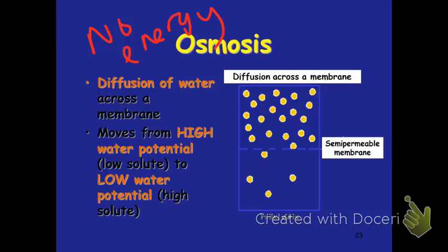If we look at these water molecules — the yellow ones — the high concentration side is on one side, and the low concentration side is on the other. The water is going to move from the high concentration side to the low concentration side, going down the concentration gradient from high to low.